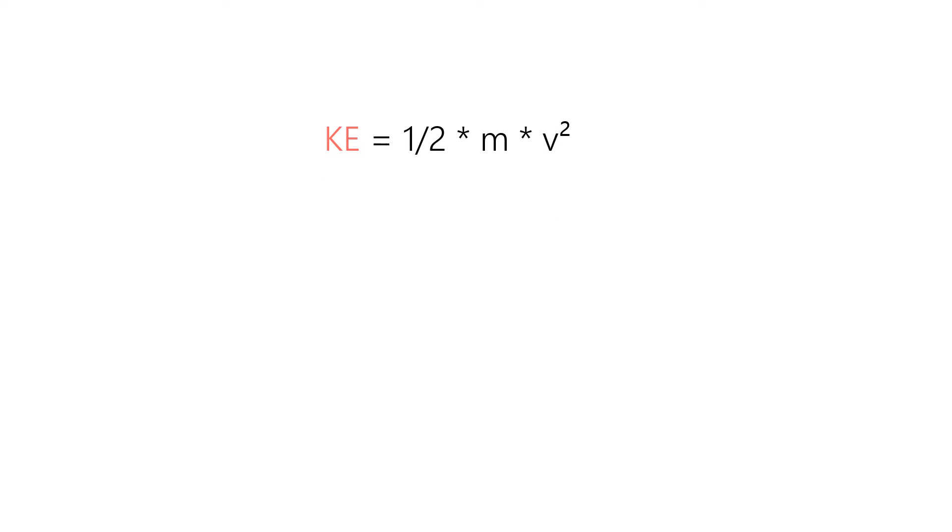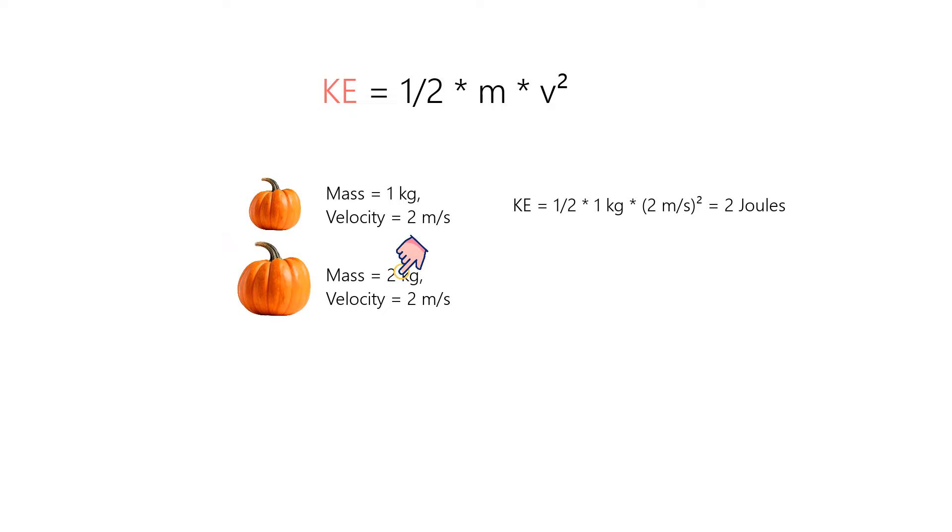So if you have a mass of one kilogram moving at a velocity of two meters per second, the kinetic energy is 1/2 × 1 kg × (2 m/s)² that equals two joules. Now, if you double the mass, the kinetic energy becomes 1/2 × 2 × (2)² that equals four joules.